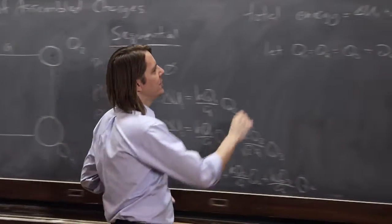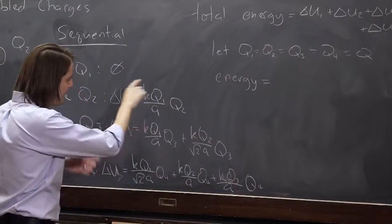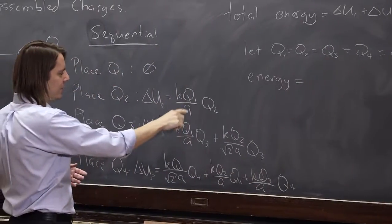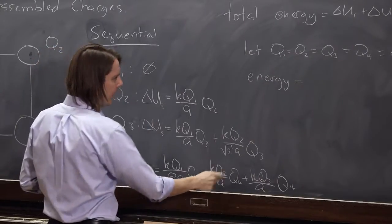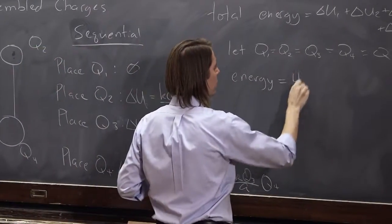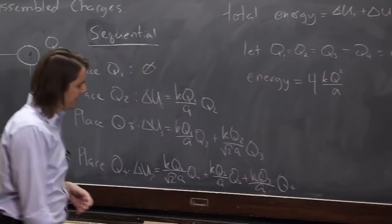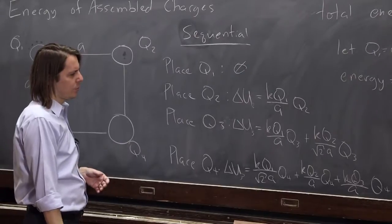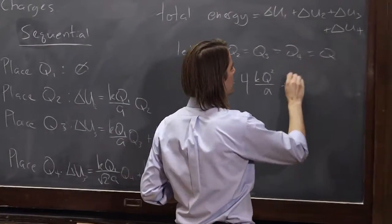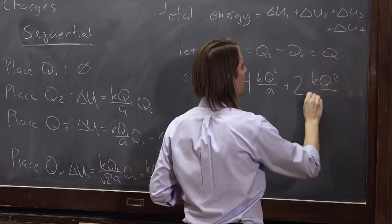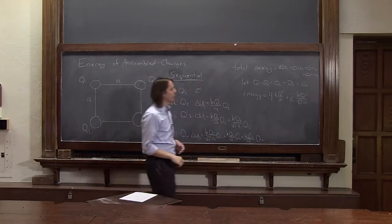So we can then just say that the energy to assemble them equals how many of the KQ over A's. It looks like there's 1, 2, 3, 4. 4 times KQ squared over A. And then how many of the square root of 2, it looks like just 2, plus 2 times KQ squared for the square root of 2A.